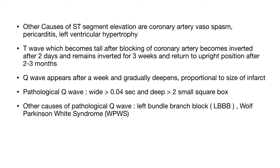The T wave, which becomes tall immediately on blockage of a coronary artery, becomes inverted after two days and remains inverted for three weeks, then gradually becomes flat and then upright over two to three months. The Q wave — an indicator of muscle death — appears after a week, then gradually deepens and remains permanent, proportional to the size of the infarct. Q waves are called pathological if they are more than 0.04 seconds wide and two small boxes deep. Other causes of pathological Q waves besides transmural infarction include left bundle branch block and Wolff-Parkinson-White syndrome.